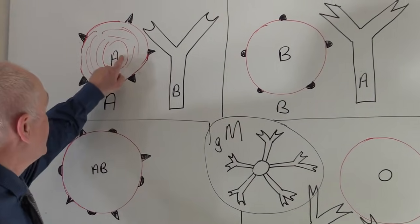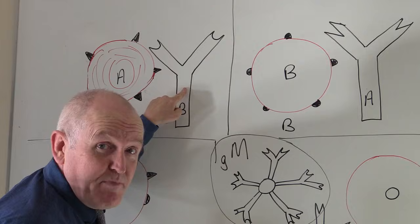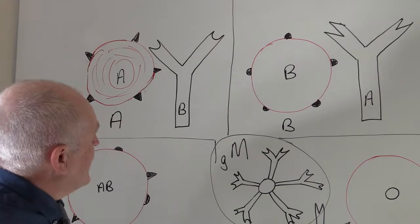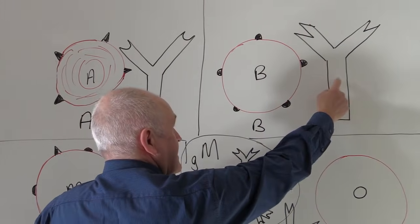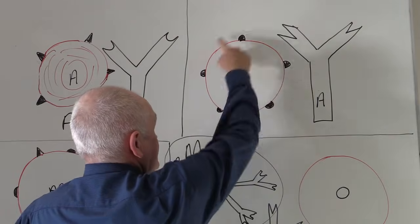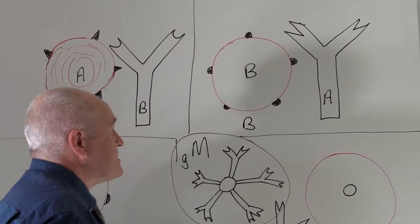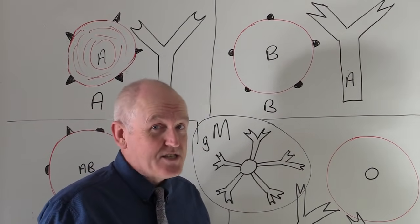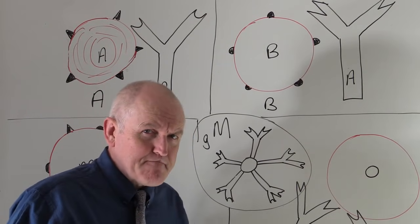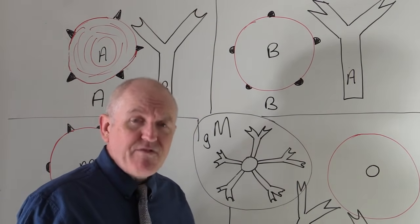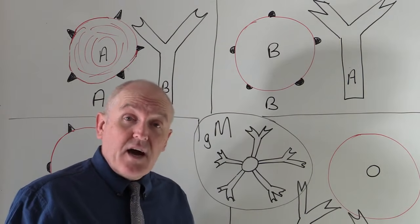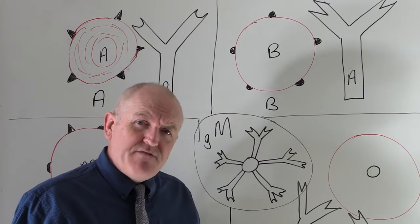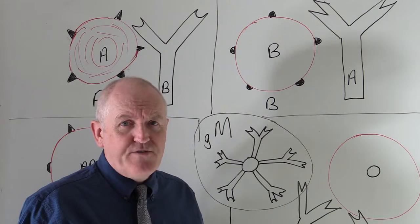Blood group A is going to have anti-B antibodies because there are no B antigens. And it's the same with blood group B — there are going to be anti-A antibodies because there's no A antigen. So for some reason, you develop antibodies to any of the ABO antigens you don't have. These are naturally occurring, and whoever you look at with blood group A, they are going to have anti-B antibodies in their plasma.